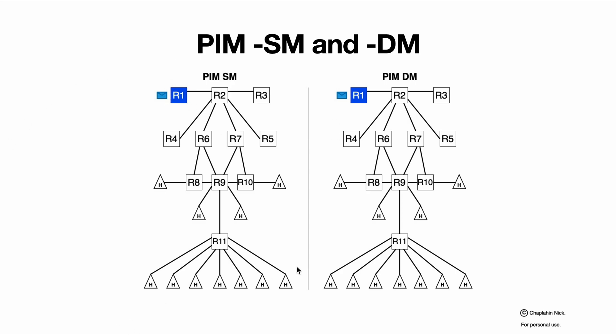We have some source, we have some receivers that wish to receive multicast traffic that is going from this source, and now PIM-SM and DM somehow start working. How do they work?